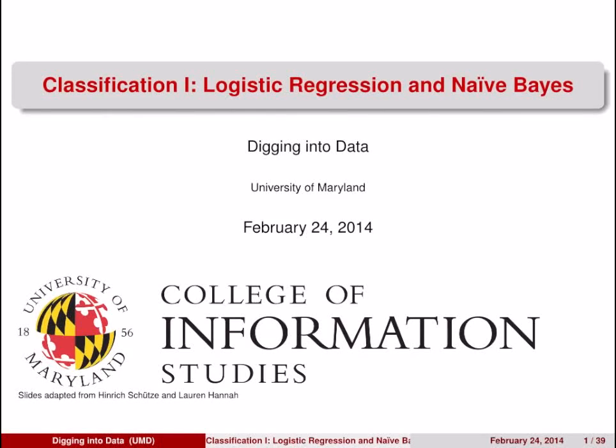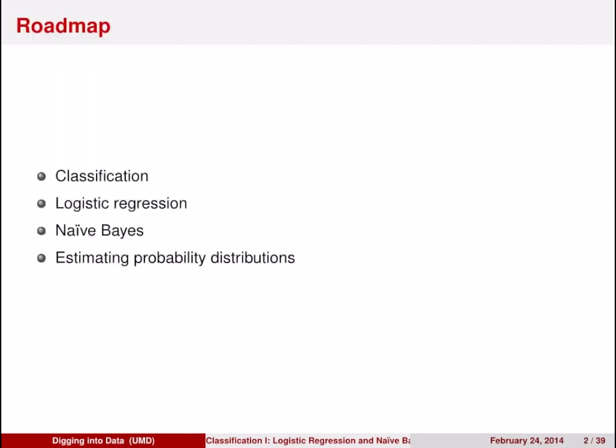This is the first of two lectures about classification. What we're going to be talking about today are two examples of classification algorithms, logistic regression and naive Bayes. But before we get into them, let's first begin with a discussion about the classification problem in general.